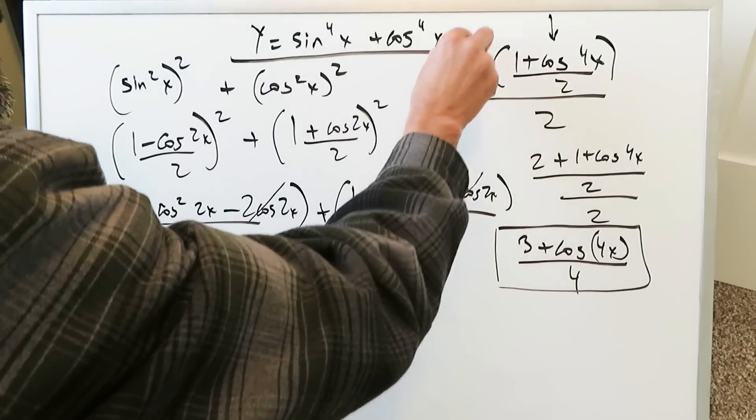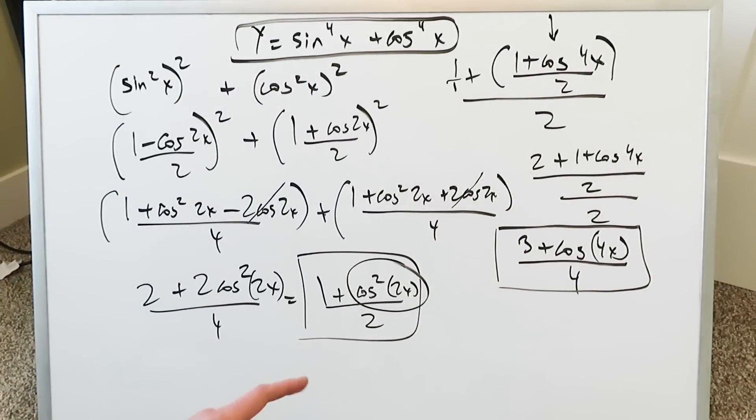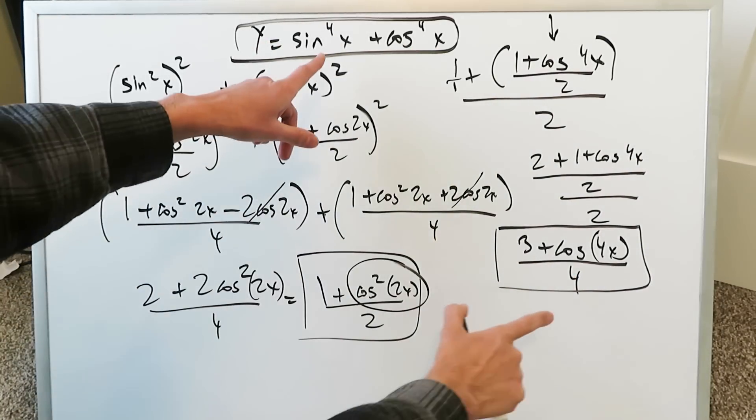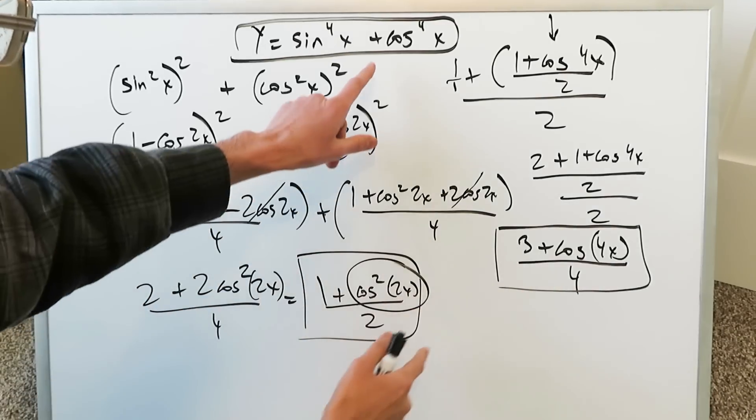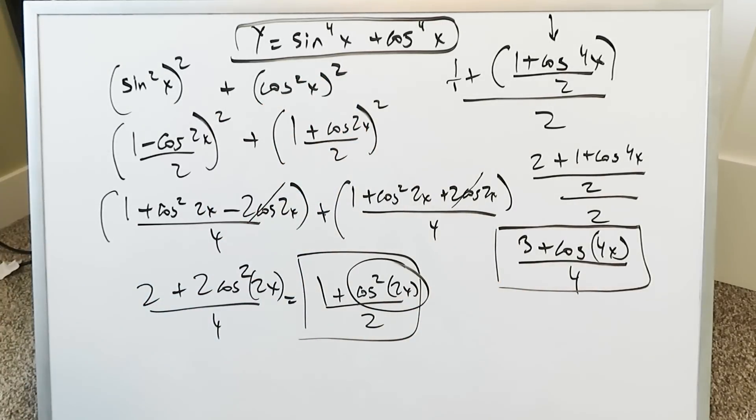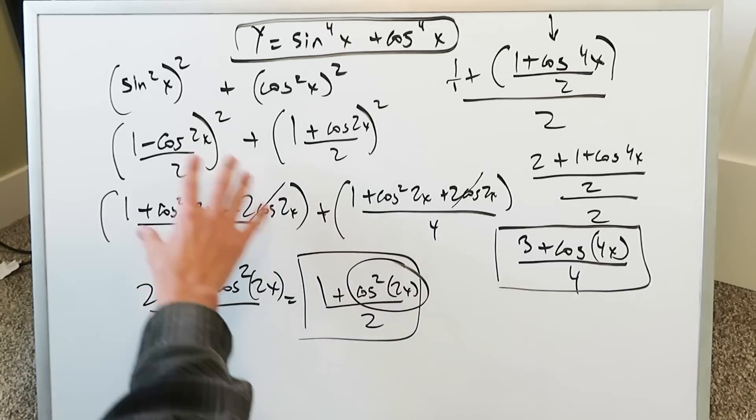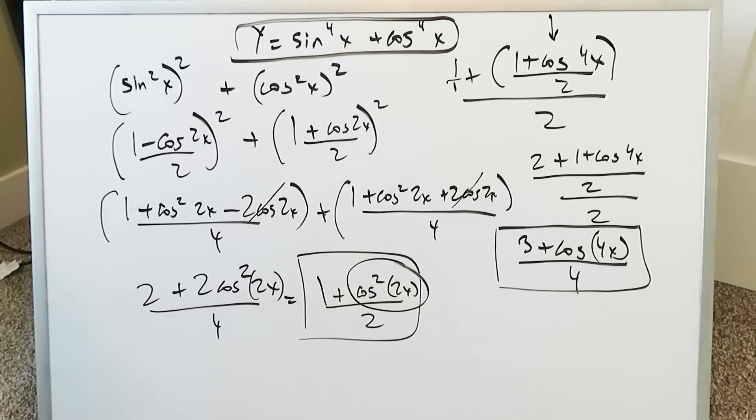If you were to graph this out and then you graph this out the graphs should be identical because these both represent two different ways of expressing the same function. This function and this function are equivalent. Graphing them out on a software, you'll see that there will be identical graphs.